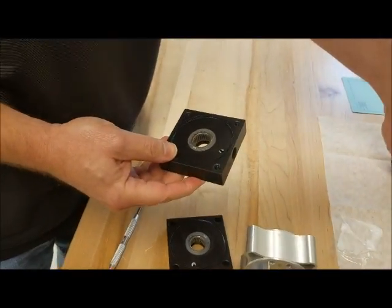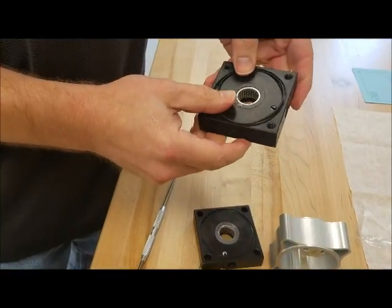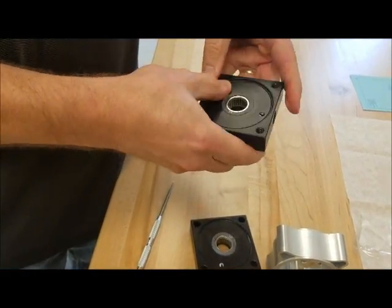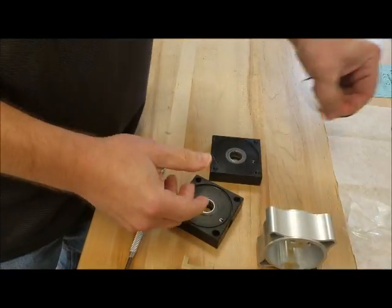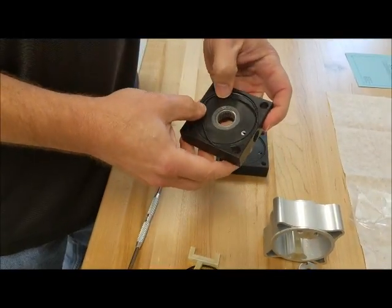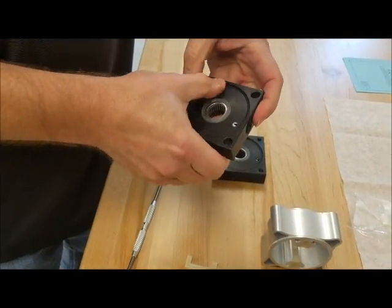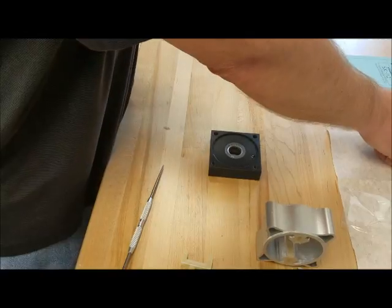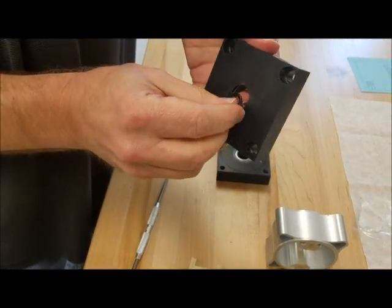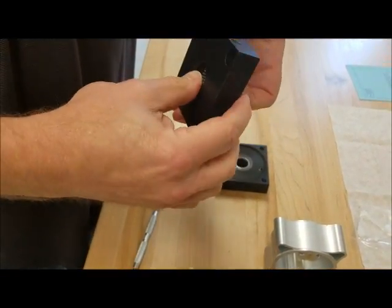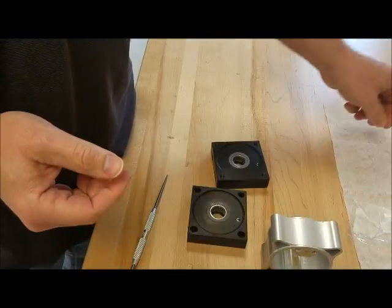Then once that's done, we're going to use our tube o-rings. Put the new ones in. Make sure they're seated in the grooves real well. Then we're going to grab our shaft o-rings. We're going to put them in the back side.